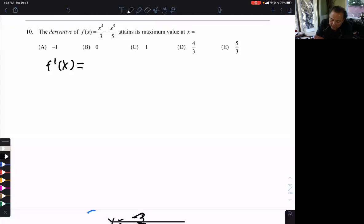To do that, let me rewrite f of x. No, I don't have to, never mind. The derivative of that would be 4x cubed over 3 minus 5x to the fourth over 5.